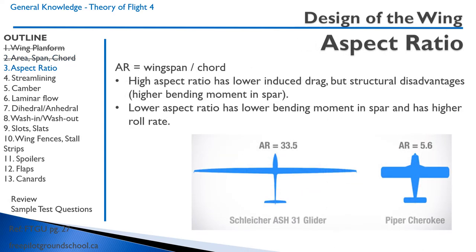The aspect ratio of a wing is the wingspan divided by the chord. A high aspect ratio wing has a lower induced drag, but there are structural disadvantages such as a higher bending moment in the spar. A lower aspect ratio has a lower bending moment in the spar but has a higher roll rate. For example, a glider has an aspect ratio of 33.5 with a massively long span and very narrow chord, whereas the Piper Cherokee has a short span and a wide chord.